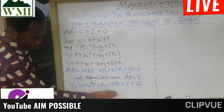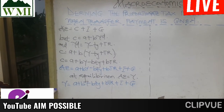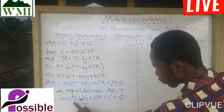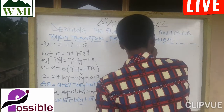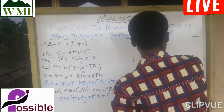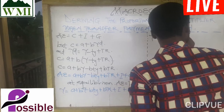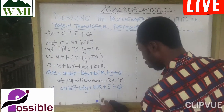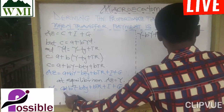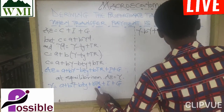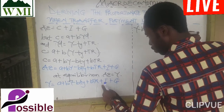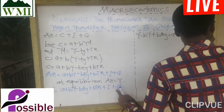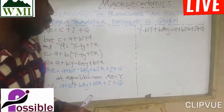Once you have reached here, we are going to group like terms. Grouping like terms, you get: Y minus bY plus bTY equals A plus bTR plus investment plus government spending.